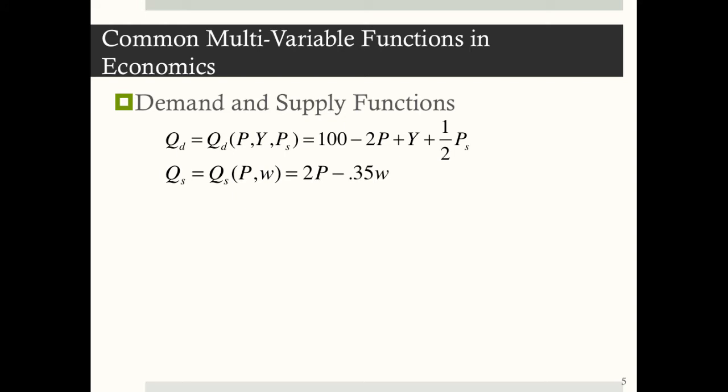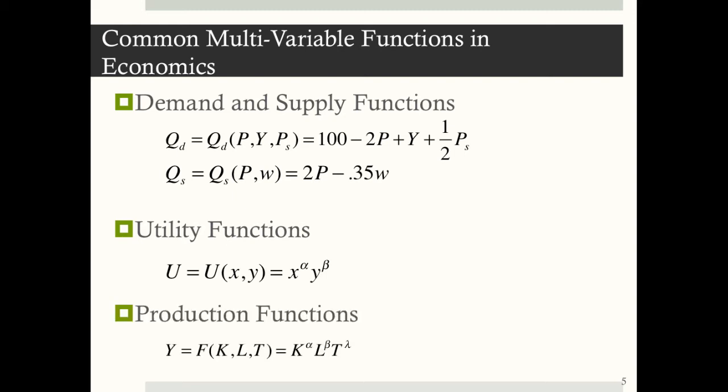You'll come across many multivariable functions in your economics courses. The first ones you'll most often be introduced to are the demand and supply functions. Here we have a demand equation and a supply equation: demand tells us that quantity demanded depends on price, income, and the price of a substitute; supply depends on the price and the wage. You'll also see utility functions in intermediate micro — how much satisfaction a consumer gets from consuming goods x and y — and production functions, where output depends on capital, labor, and land.